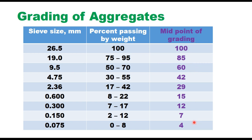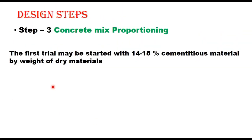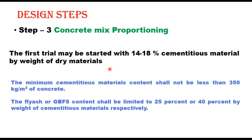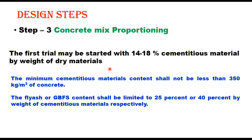The third step is concrete mix proportioning, where proportioning of ingredients is done to achieve the target mean strength — both compressive and flexural. The first trial may be started with 14 to 18 percent cementitious material by weight of dry materials, with minimum cementitious material not less than 350 kg per cubic meter. Cementitious material means cement plus admixtures (fly ash limited to 25 percent, GGBFS limited to 40 percent by weight of cementitious material).